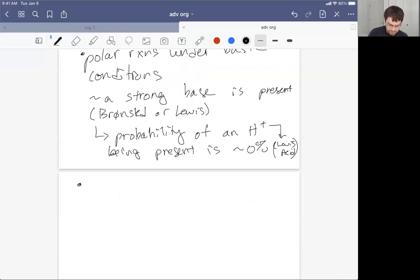I said that basic conditions were one example, but we also have under acidic conditions as well. Under acidic conditions, it's sort of the opposite definition—a strong Bronsted or Lewis acid is present.